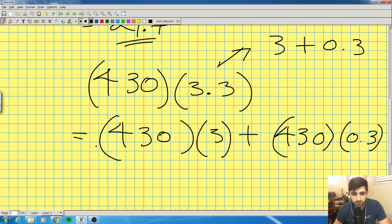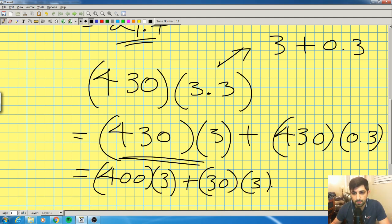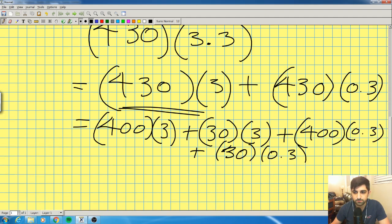Notice all this is is just expansion, right? That's all it is. And then if I don't know this multiplication right here, I can split 430 further, right? So I could do 400 times 3 plus 30 times 3 plus 400 times 0.3 plus 30 times 0.3. And if I wanted to, I could split that even further, right? And I'm going to show you how to do that just because this is balling, okay?